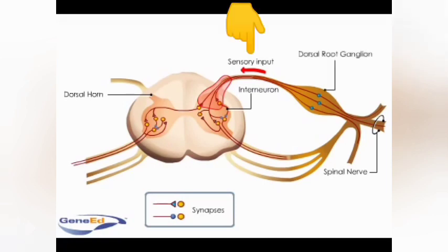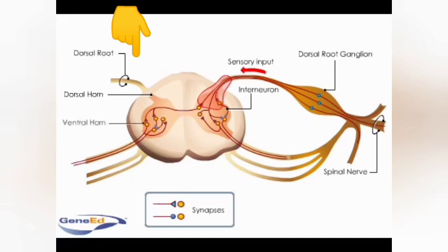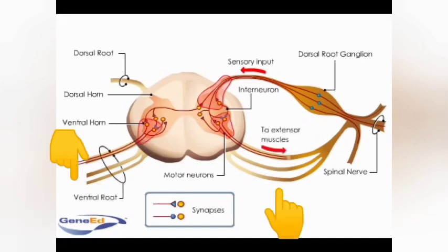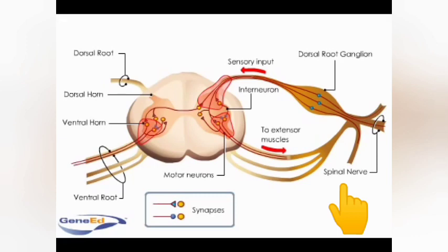A bundle of fibers passes into the posterior horns forming the dorsal or afferent root. Fibers pass outward from the anterior horns forming the ventral or efferent root. These two roots join to form spinal nerves.